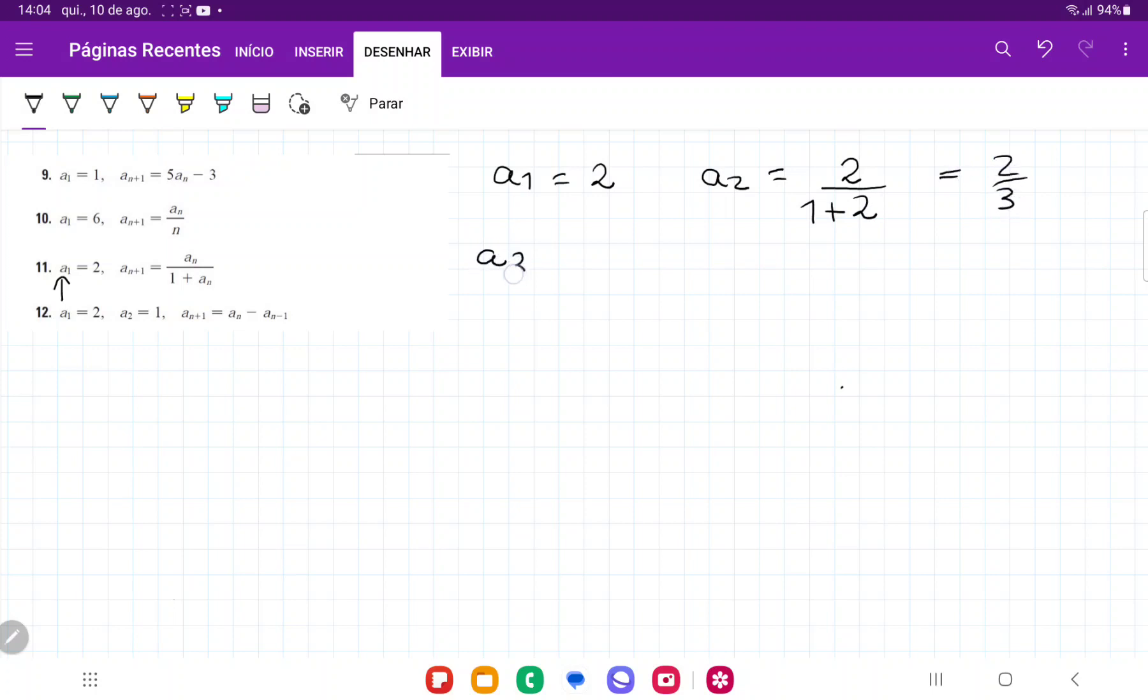And now a3 is going to be the same thing. We're at an plus 1, so we're going to look at the previous value, 2 thirds over 1 plus 2 thirds, and that gives us 2 fifths.